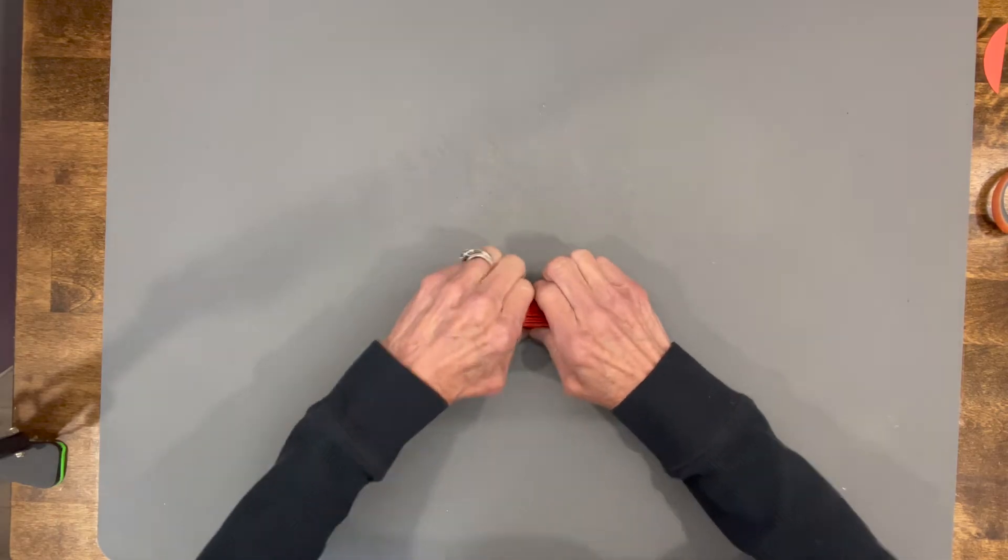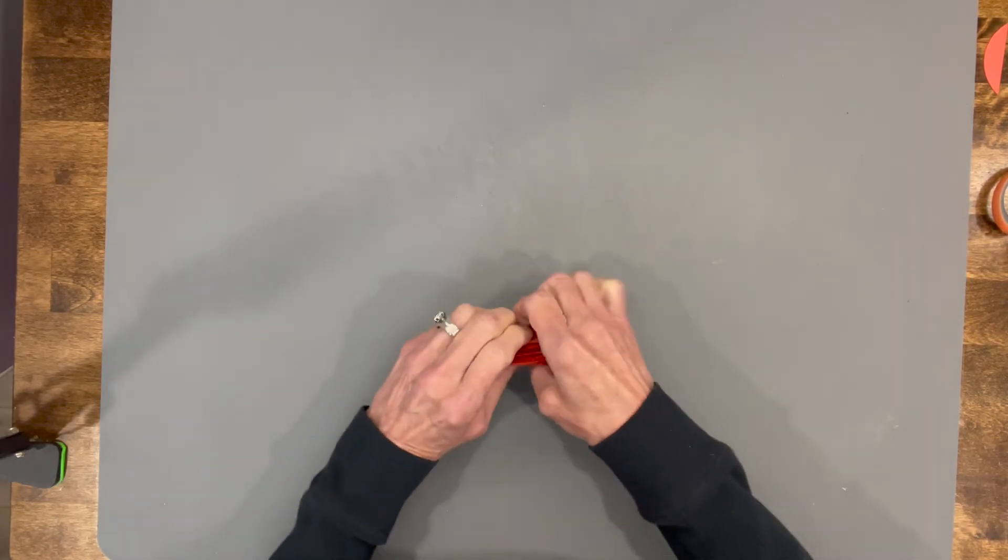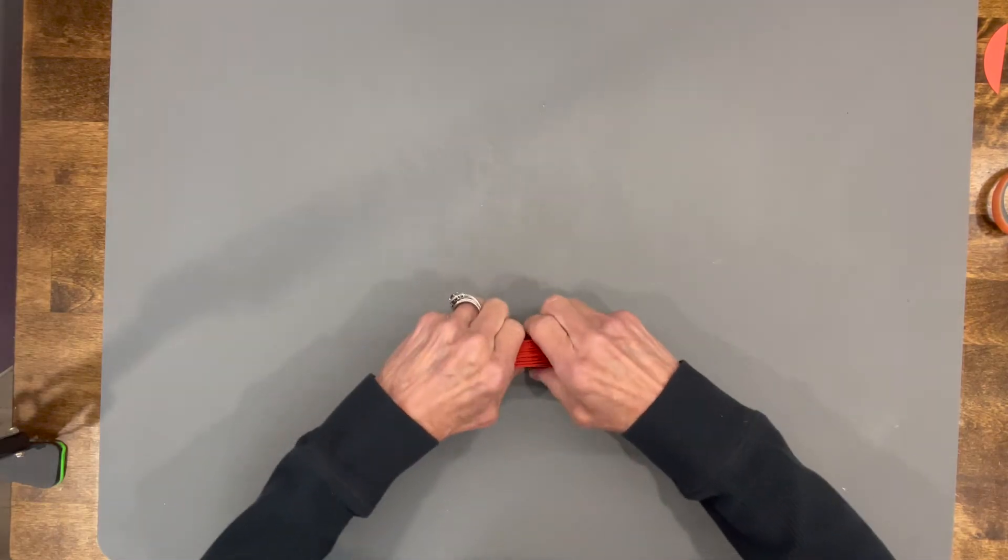Okay, you can go ahead and just squeeze them down there at the bottom where the fold is. Just put some pressure on those to get them flattened out a bit more.